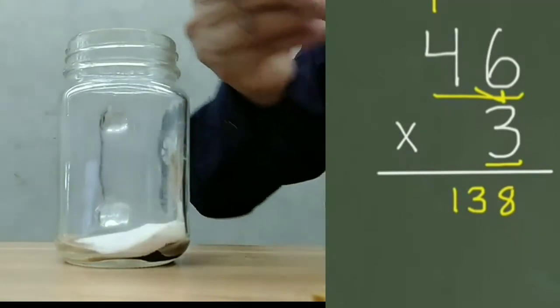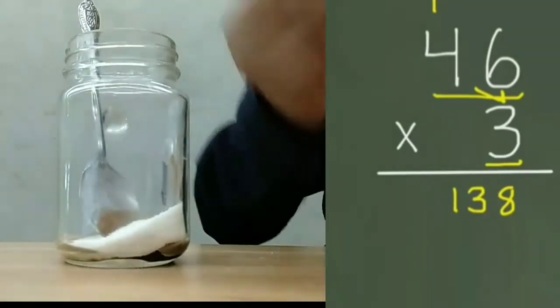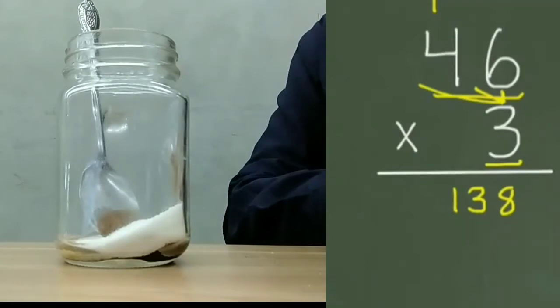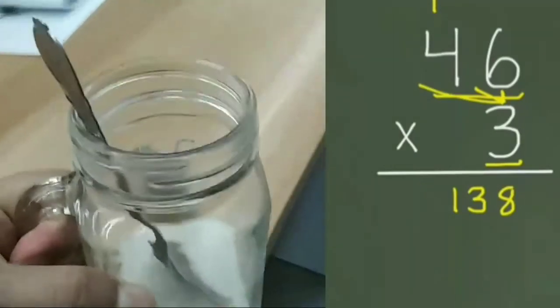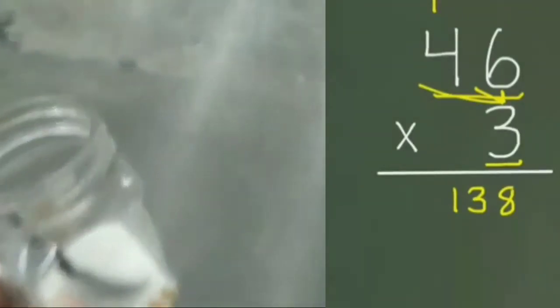I've now multiplied the 3 times every digit on the top factor. If there was one more digit, we'd keep going, but we've reached the end. So now that I'm done with my 3, I need to put my 5 back in.